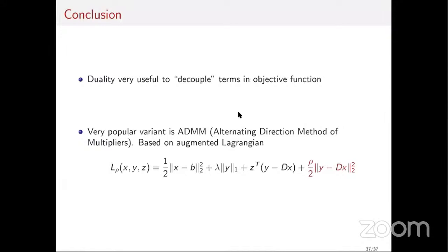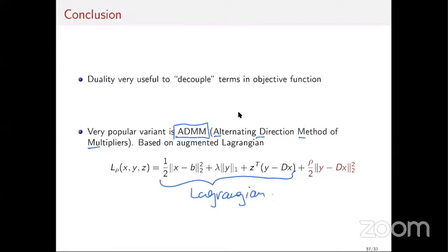Dual methods are very popular, especially in inverse problems, for denoising, and in imaging. Recently there has been much interest in a variant called the ADMM method — Alternating Direction Method of Multipliers — which is very similar to what I described today, except it's based on the augmented Lagrangian rather than the ordinary Lagrangian.